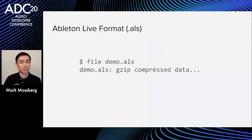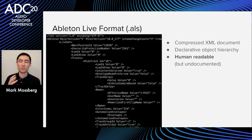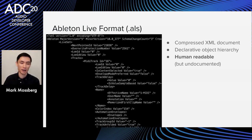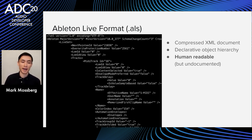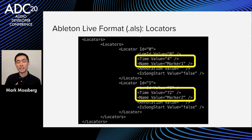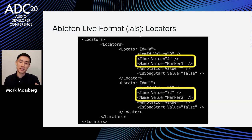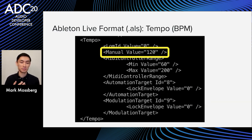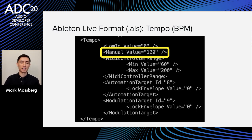Starting with Live: ALS files are actually just compressed XML, which immediately makes things a lot easier because these files are human readable. There are locator tags that correspond to the markers, and inside those we get time and name elements — time has the beat time, name has the text. For the tempo, there's a tempo tag with a manual element where we grab the BPM. That's really it for Live.